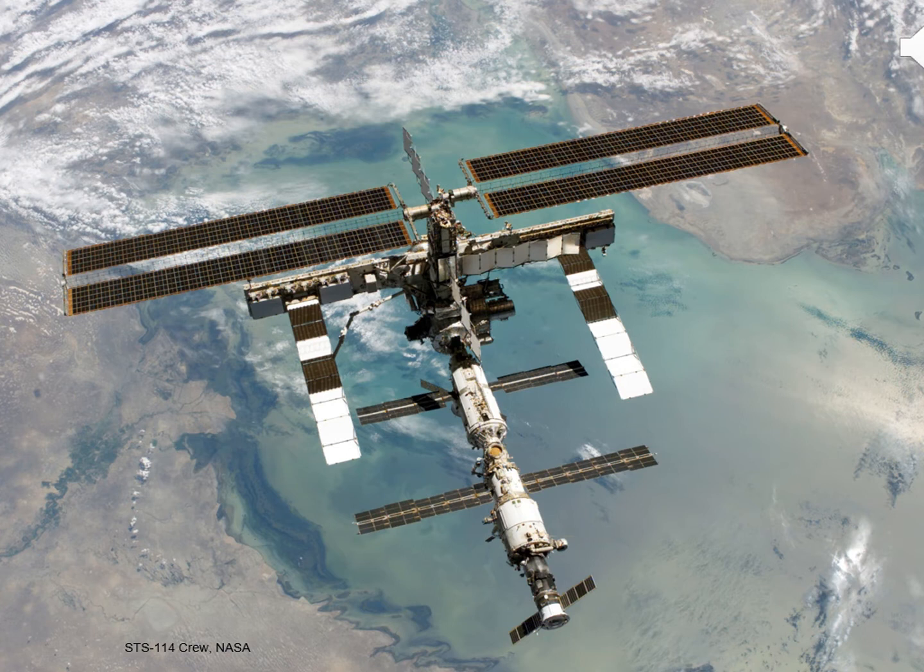The space station travels at 8 kilometers per second, going around the Earth every hour and a half. It's been doing this for many years now.